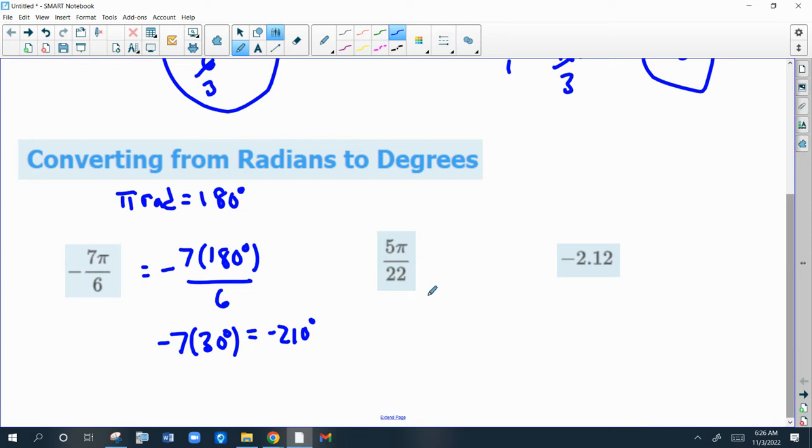So 5 pi over 22, same thing. Pi is 180 degrees. So that's your angle. You just reduce. 2 goes into 180, 90 times, and 2 goes into 22, 11 times. I don't think there's any left to reduce. So it's 5 times 90, 450 over 11 degrees.